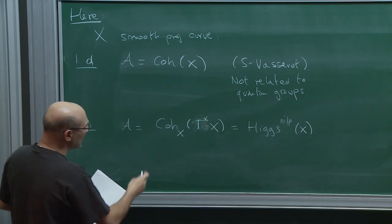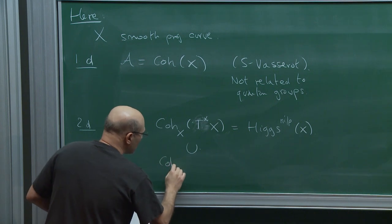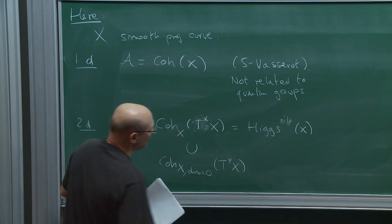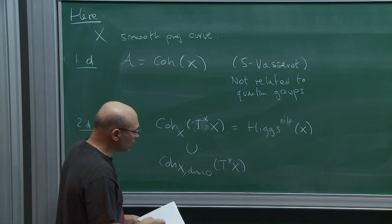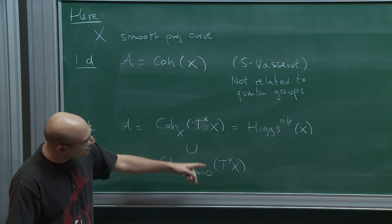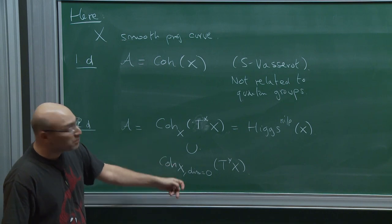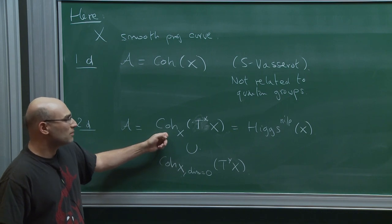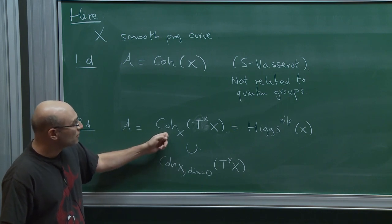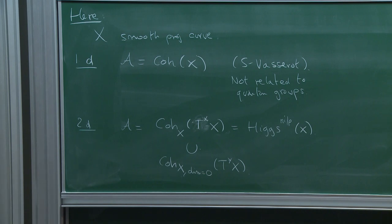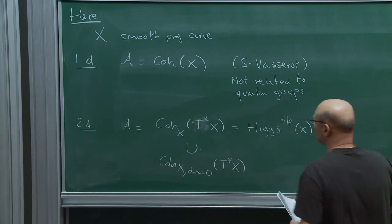Inside this category, we have the category of coherent sheaves on X whose support is zero-dimensional, corresponding to Higgs torsion sheaves. This gives a subalgebra which, in geometric representation theory, corresponds to modifying a vector bundle on the surface at a point. If I consider higher rank sheaves, this corresponds to modifying a vector bundle or torsion-free sheaf on the surface by a one-dimensional torsion sheaf — this kind of modification appeared in Rapture's talk as well.